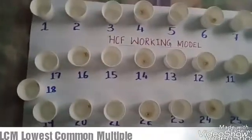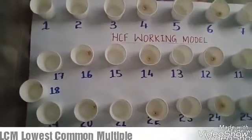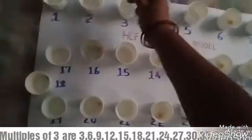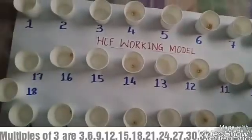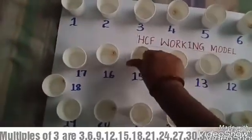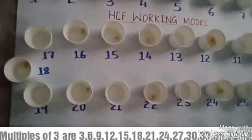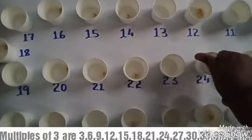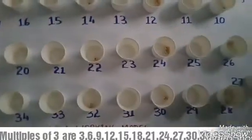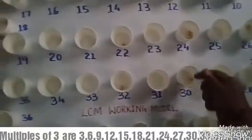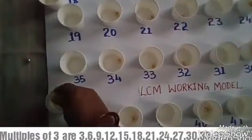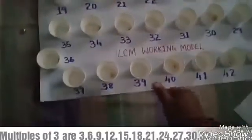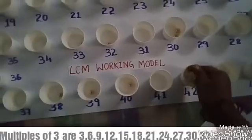Now we go on adding the multiples of 3. The multiples of 3 are: 3, 6, 9, 12, 15, 18, 21, 24, 27, 30, 33, 36, 39, and so on.